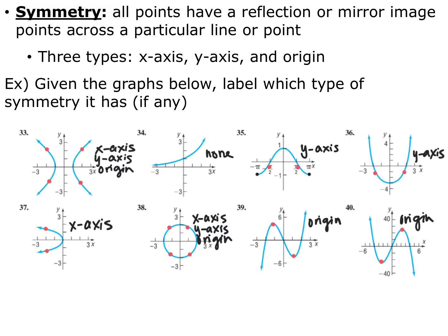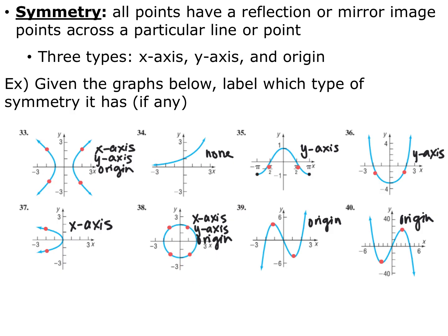For number 33, it has all three. A point in the first quadrant reflects across the x-axis, across the y-axis, and across the origin, and that's true for all points in the domain. For number 34, there's no symmetry. For number 35, there is y-axis symmetry — every point on the left side of the y-axis has a matching point on the right. Same thing with 36. For number 37, there is x-axis symmetry — every point above the x-axis has a matching point below it.